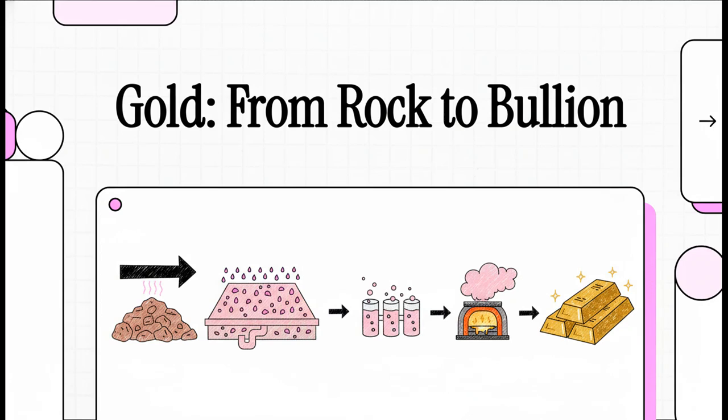Have you ever wondered how we get gold, not from a riverbed, but from solid rock? Well, today we're diving into the absolutely incredible industrial journey that transforms a literal mountain of rock into a single bar of pure gold. It's a story of brute force, clever chemistry, and a scale that's almost hard to believe.